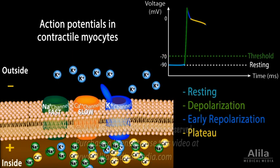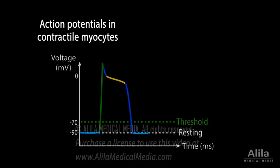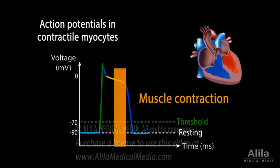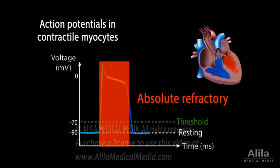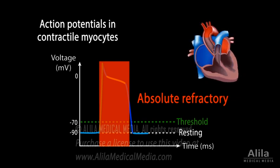Repolarization is due to potassium efflux, with calcium channels closed. Because of the plateau phase, cardiac muscle stays contracted longer than skeletal muscle. This is necessary for expulsion of blood from heart chambers. The absolute refractory period is also much longer to make sure the muscle has relaxed before it can respond to a new stimulus. This is essential to prevent summation and tetanus, which would stop the heart from beating.